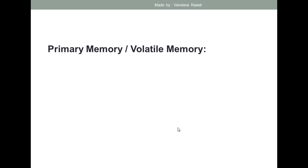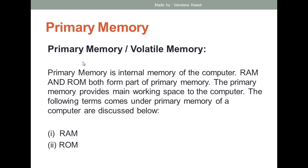Primary memory is also known as volatile memory. Primary memory is one kind of internal memory of the computer, as RAM and ROM both form part of primary memory. In case of RAM, it comes under volatile memory because volatile means temporary memory. Whereas ROM is a non-volatile memory because the data stored in ROM is permanent. So RAM is a kind of volatile memory — temporary memory — whereas ROM is a kind of non-volatile memory, meaning permanent memory.